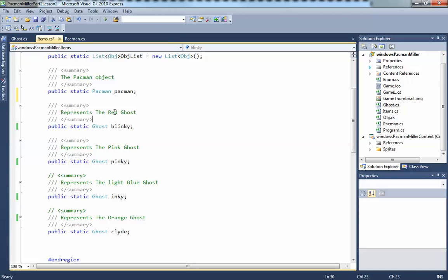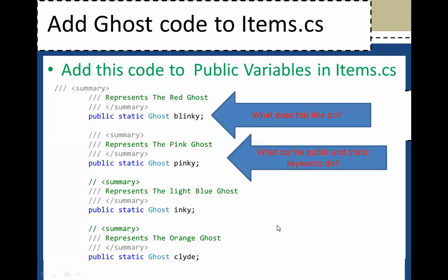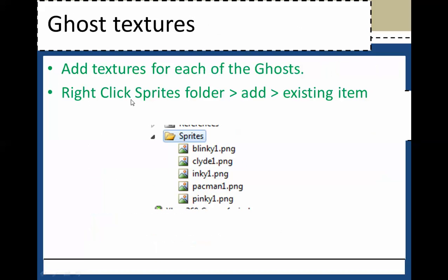Add the textures for each of the ghosts. You're going to have to find the textures for the ghosts and right click the sprites folder and add existing items. Get these pictures, put them somewhere, and then right click and add items.